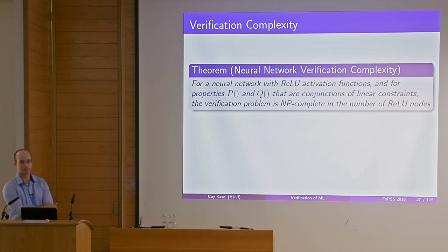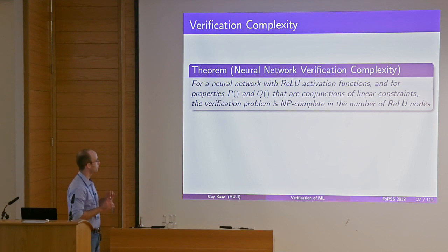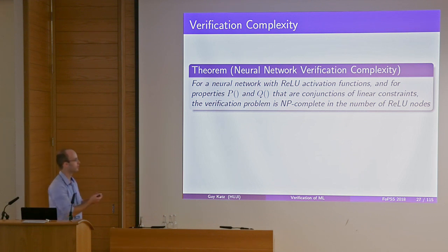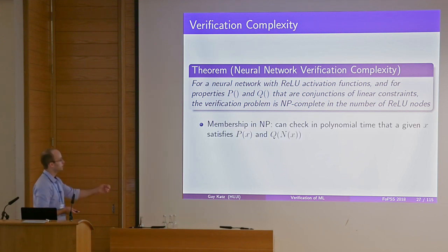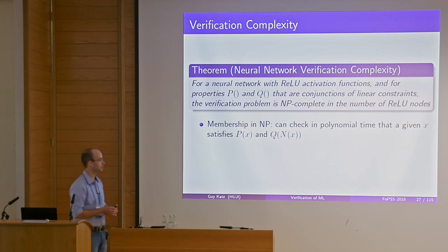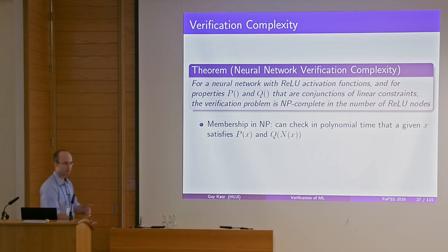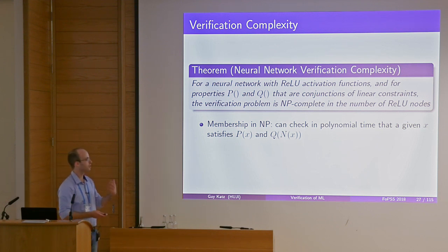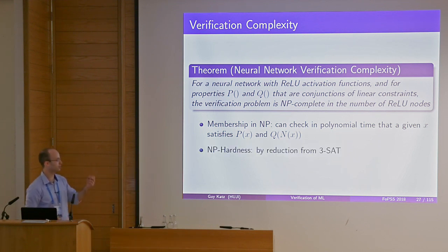How complex is this problem? Even for very simple neural networks with only ReLU activation functions, and for properties P and Q that are just conjunctions of linear constraints, the problem is already NP-complete — NP-complete in the number of ReLU constraints. Membership in NP is simple: given a satisfying assignment, you run it through the network and check that it satisfies P and Q. Next, a reduction from 3SAT shows the problem is NP-hard.